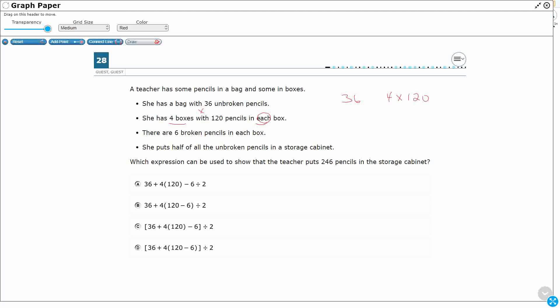There's 6 broken pencils in each box. So there's 6 broken pencils in each box. So I've got these boxes here. So maybe that's what we're looking at. And then I've got 6 broken pencils in each box. So I guess they're taking the, out of the 120, you've got the 6.